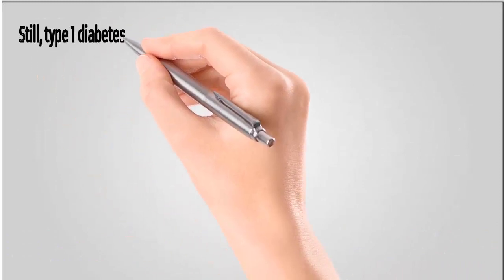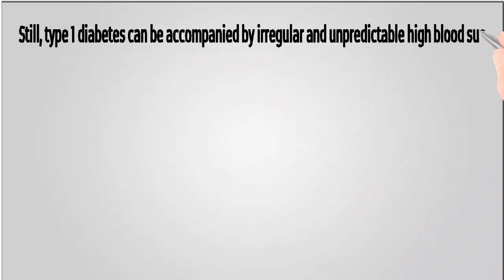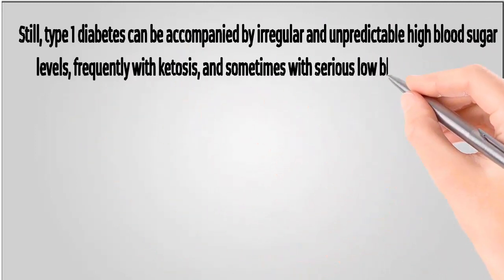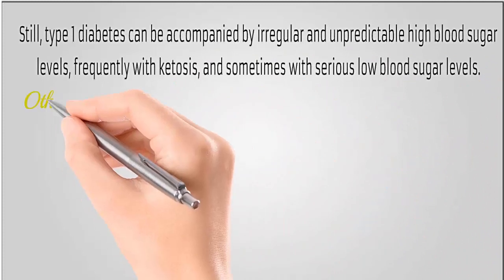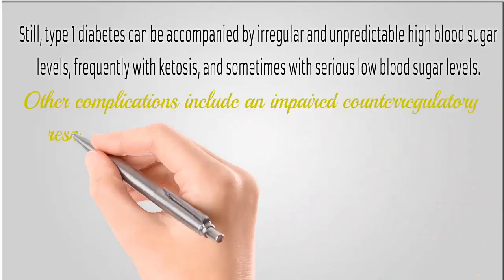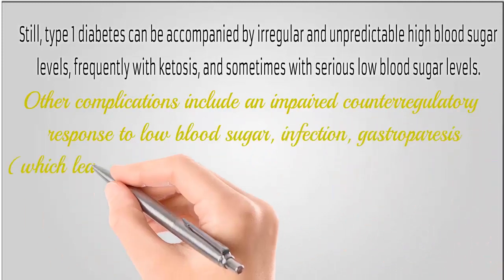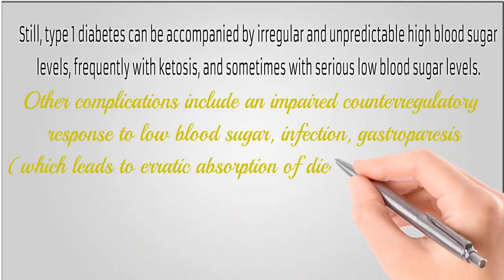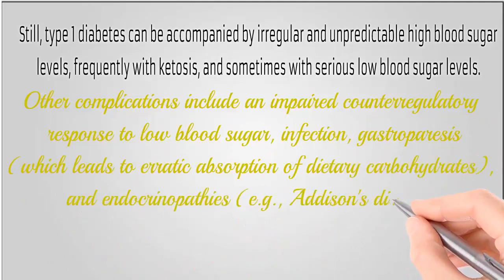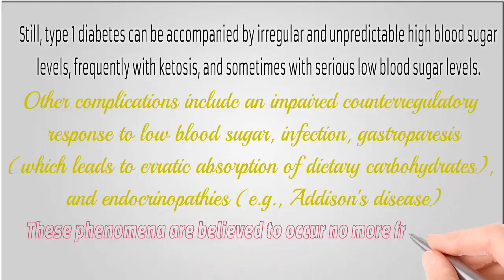Still, type 1 diabetes can be accompanied by irregular and unpredictable high blood sugar levels, frequently with ketosis and sometimes with serious low blood sugar levels. Other complications include an impaired counter-regulatory response to low blood sugar, infection, and gastroparesis, which leads to erratic absorption of dietary carbohydrates.